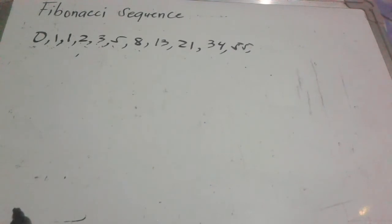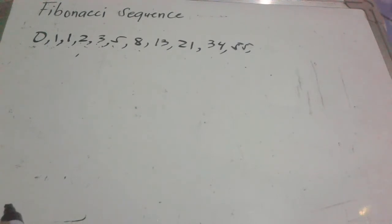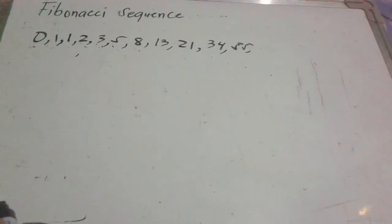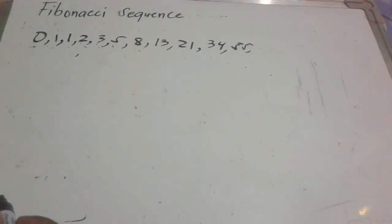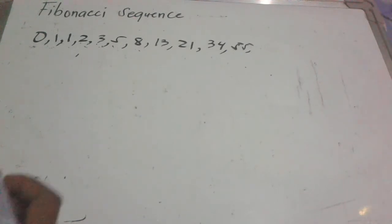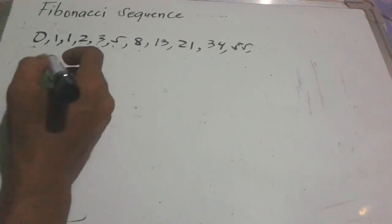We can also get the exact value of a Fibonacci term. There is a formula to get the exact term of the Fibonacci sequence. The formula is F sub n equals...